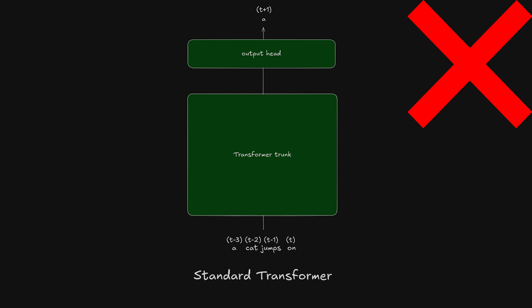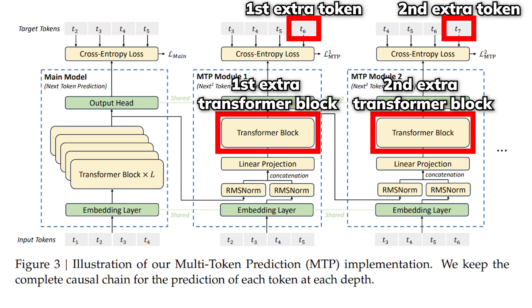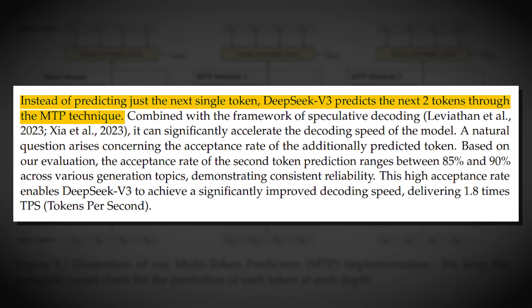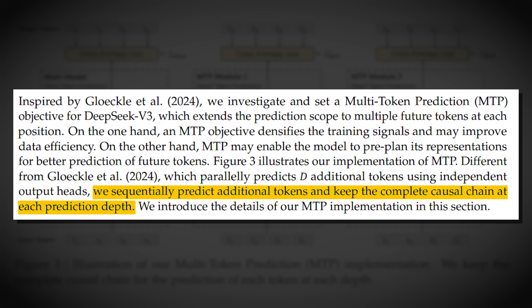And in DeepSeek V3's case, they have the model predict two tokens at once during training, and with this setup, it is able to maintain the causal chain during training. This avoids the inconsistency problem of the parallel heads.